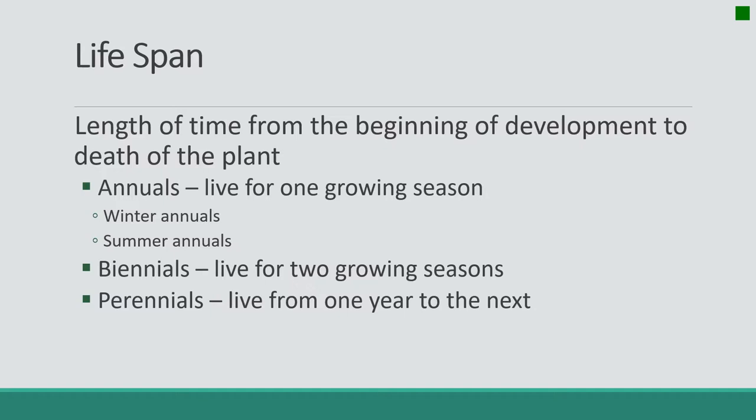Beyond annuals, we have biennials, which grow in their first year to produce a basal rosette, overwinter, and in the second year sprout, produce seed, and die. So our annuals live for only one year, whereas our biennials will live for two years.